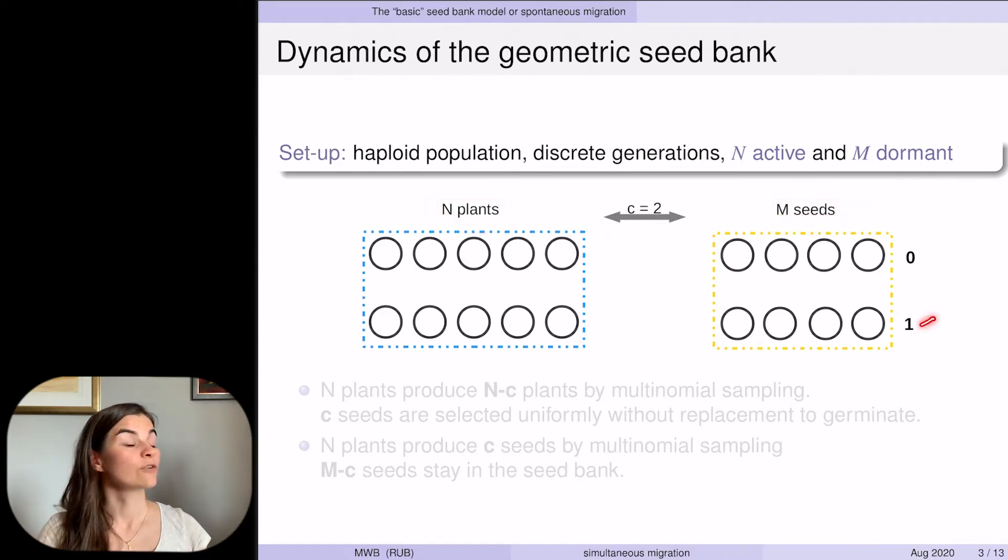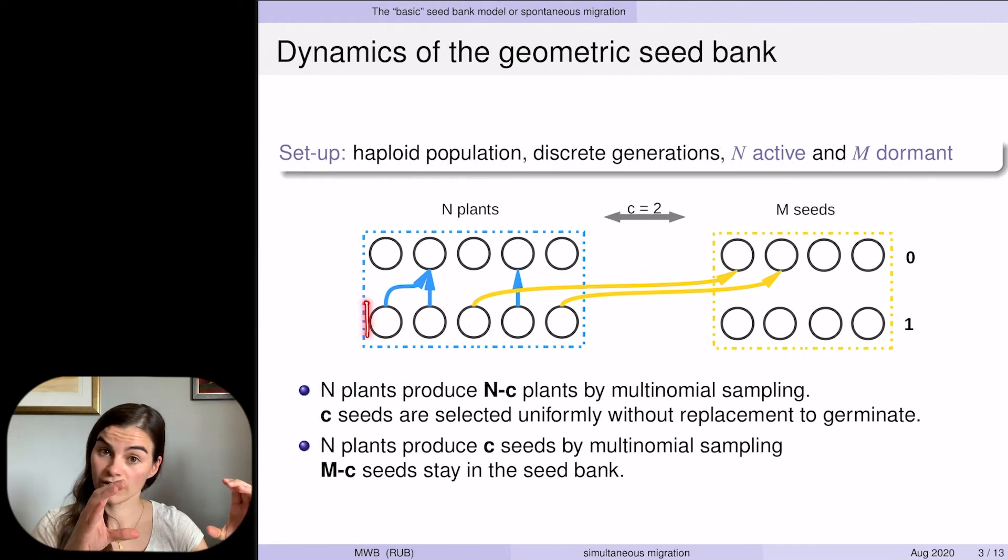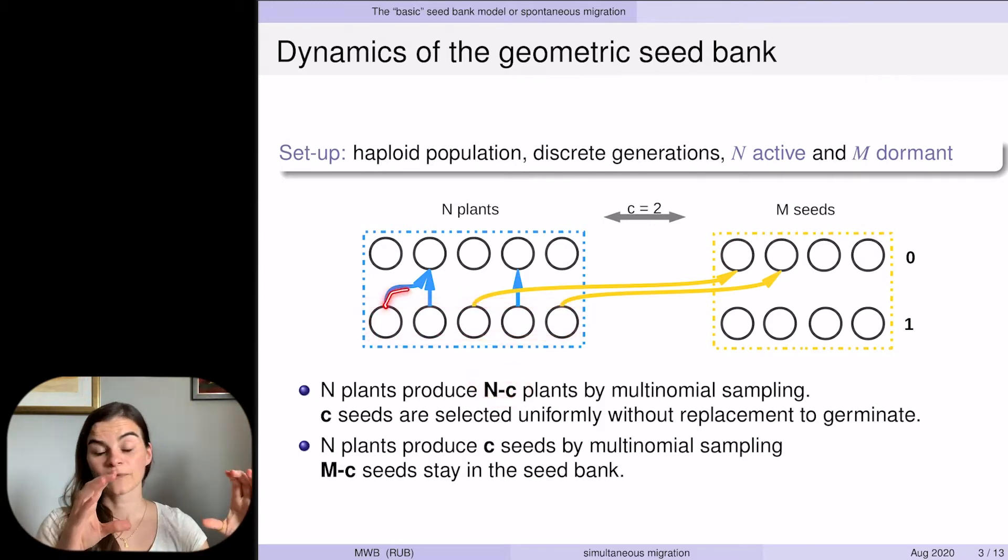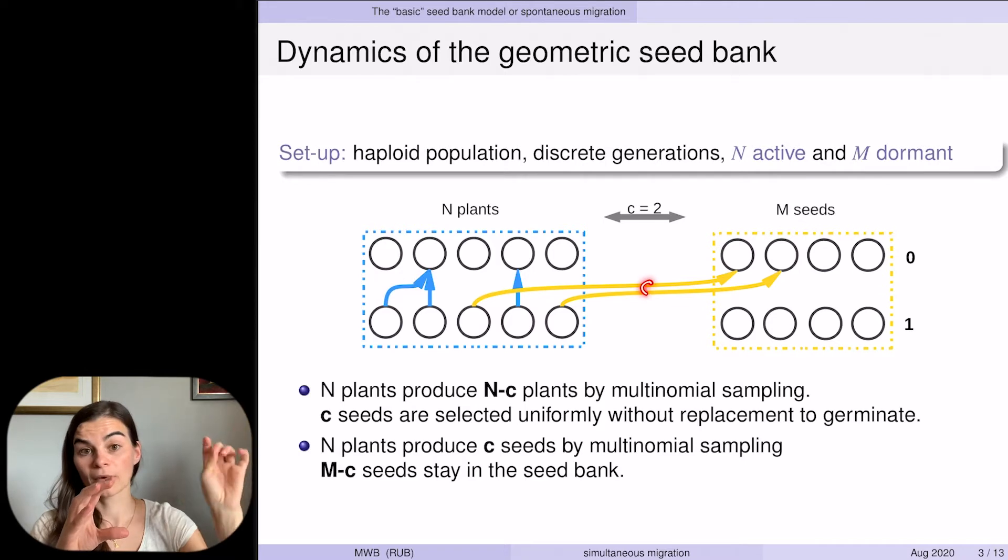How do we get generation one from generation zero? We have each child choose their parent in the previous generation independently. In the new plant generation, most of the individuals—so N minus C many—will choose their parent from the plants, whereas C many will choose their parent from the seeds in the previous generation.